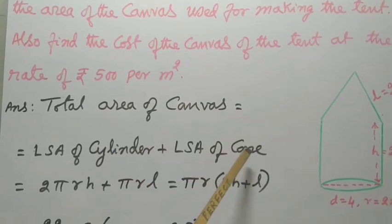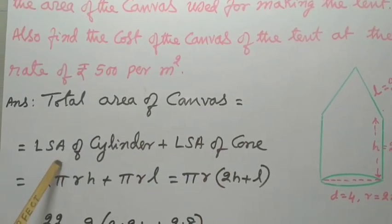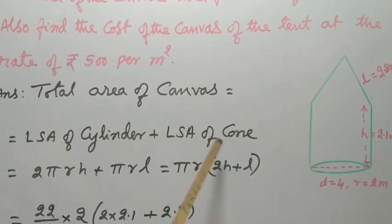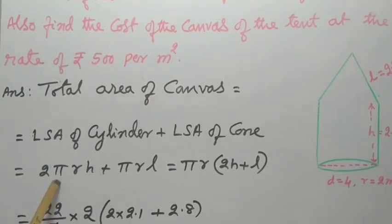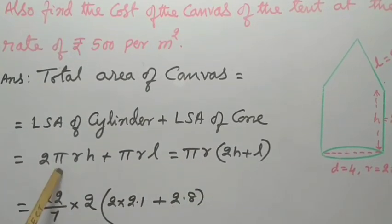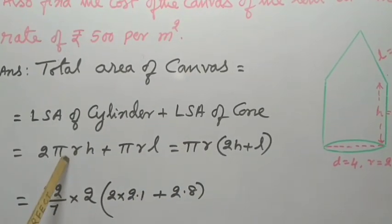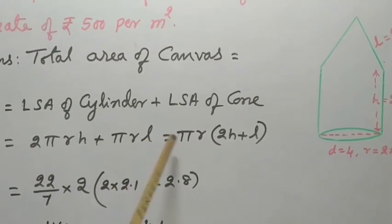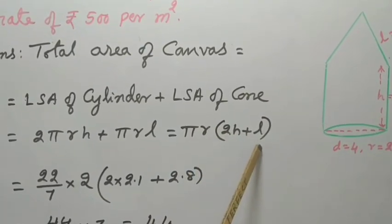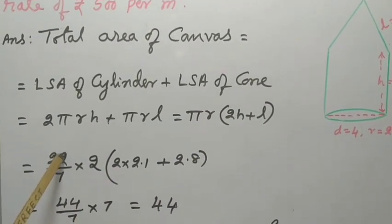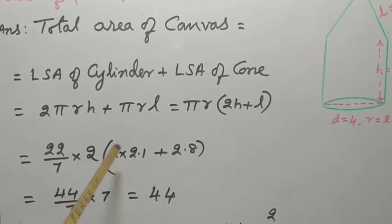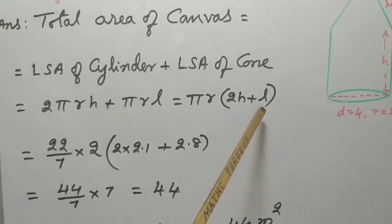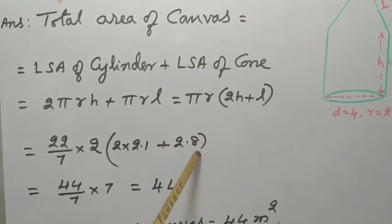That is LSA of cylinder plus LSA of cone. You may use LSA of cylinder 2πRH plus LSA of cone πRL. So, here πR common from both. If we take πR common, so quotient 2H plus L. πR into 2H plus L. So, pi value 22 over 7, R value 2 into 2 into H means 2.1 plus L equal to 2.8.